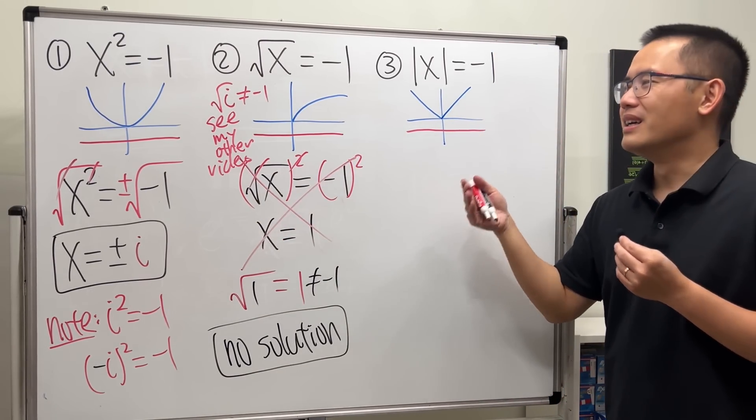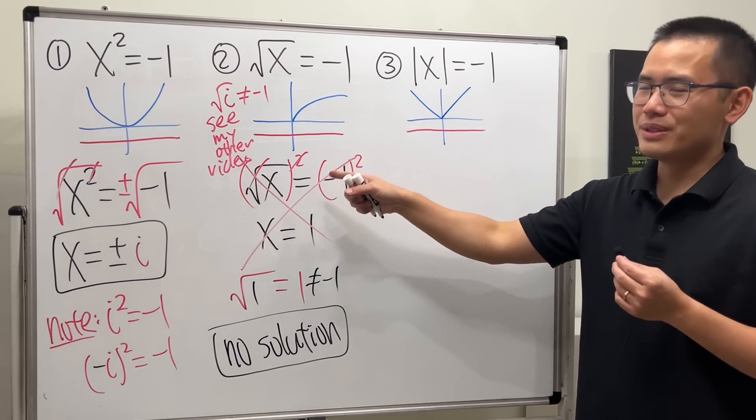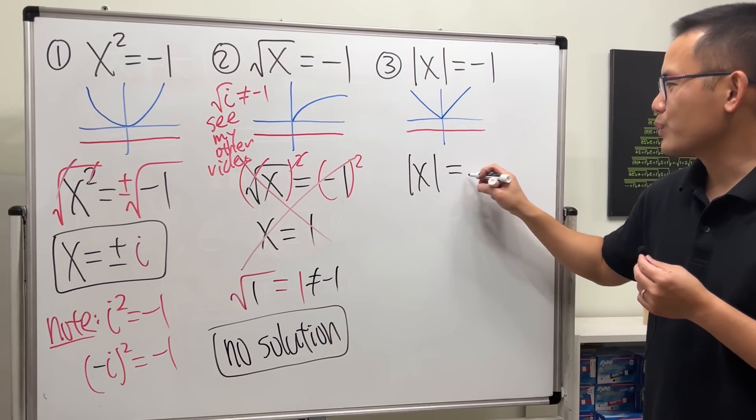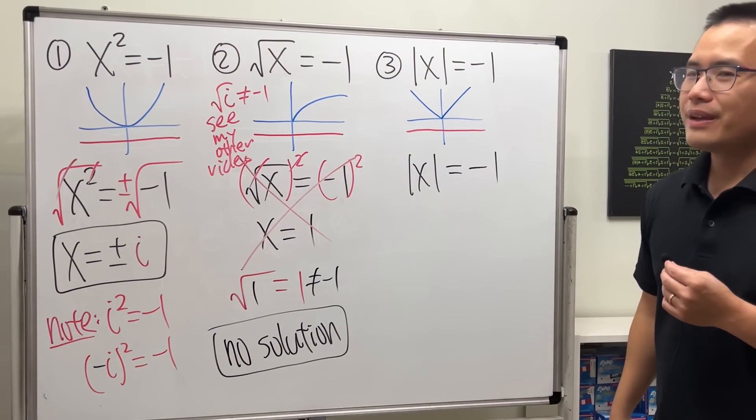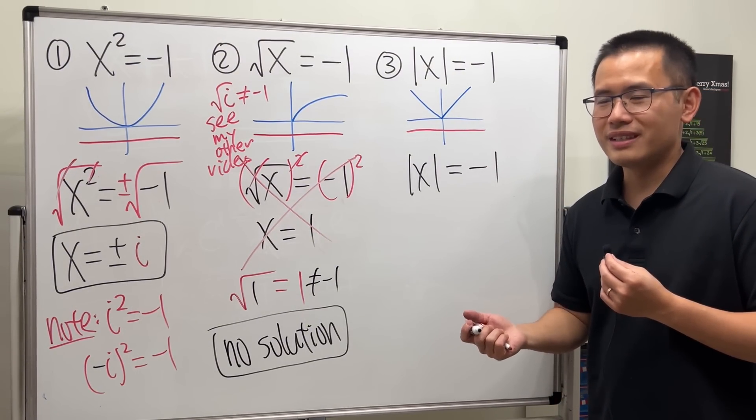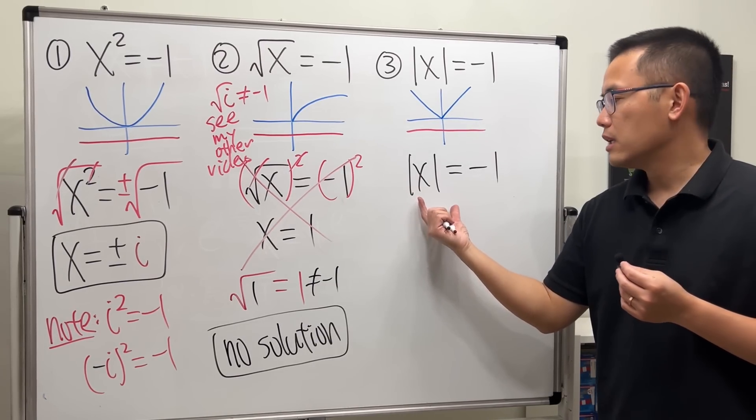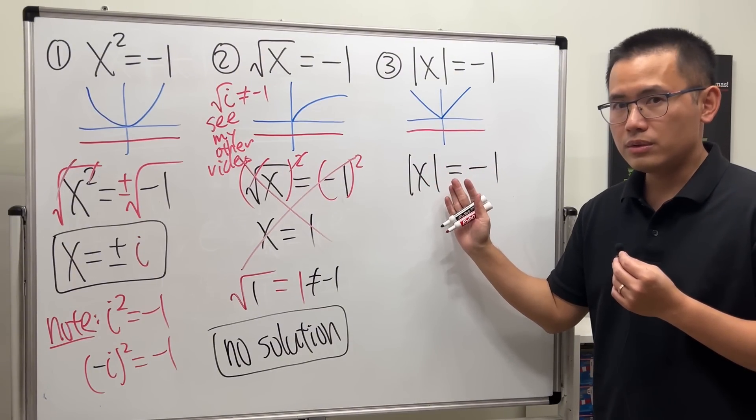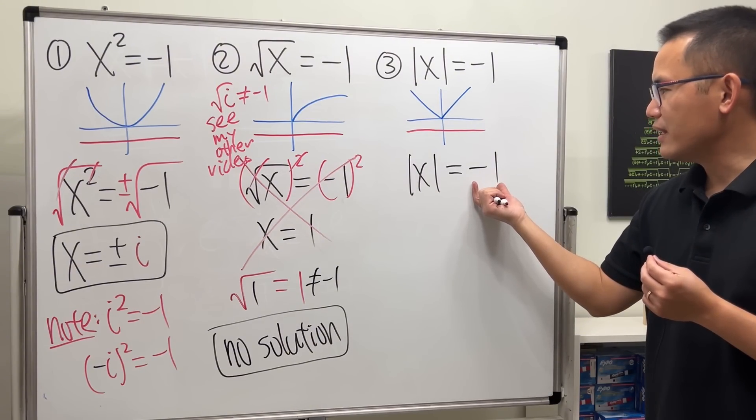Now for the last one, absolute value of x, this is similar to the second case. And how do you even start with that, solving absolute value of x is equal to negative one? No, you can't. You have to think about the definition. The absolute value of x represents the distance from x to zero.